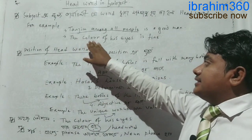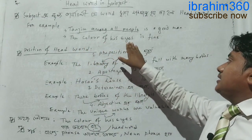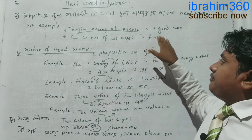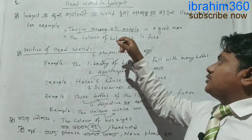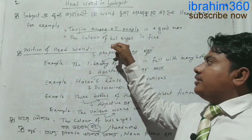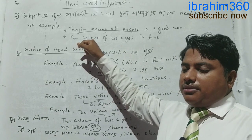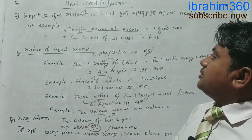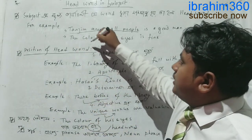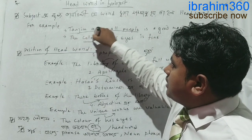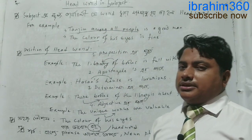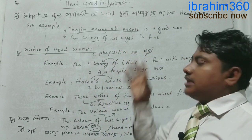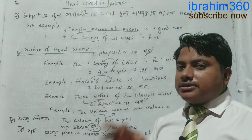The second example sentence: 'The colour of his eyes is fine.' So 'the colour of his eyes' is the subject, and colour is the headword — not eyes.